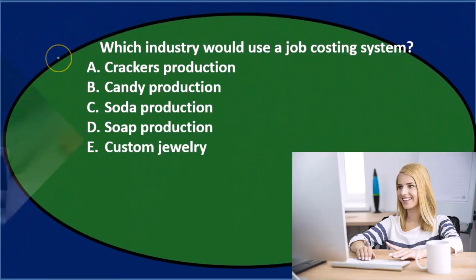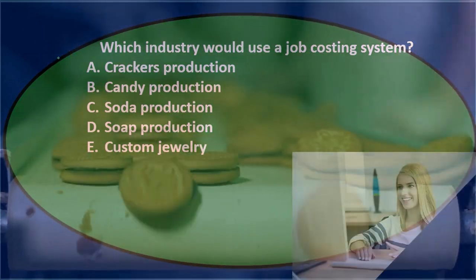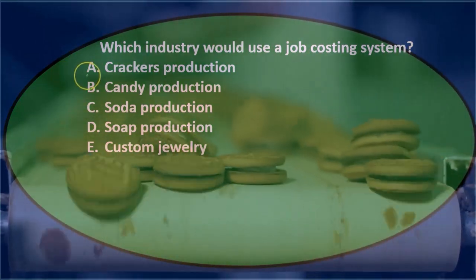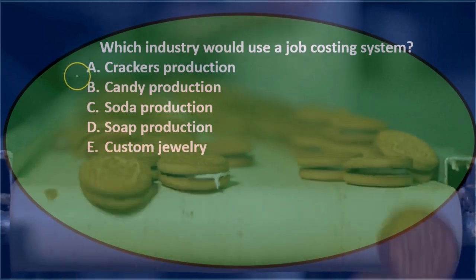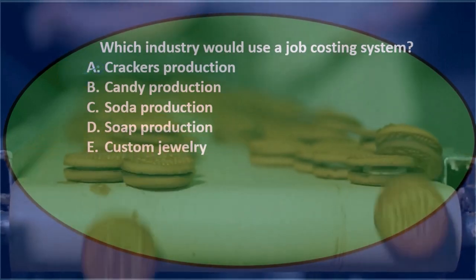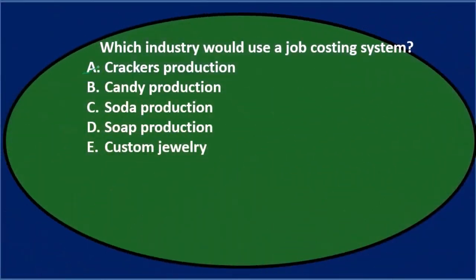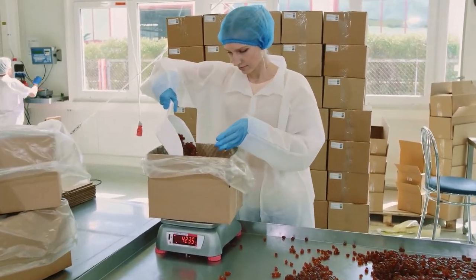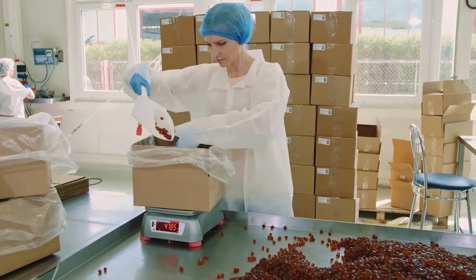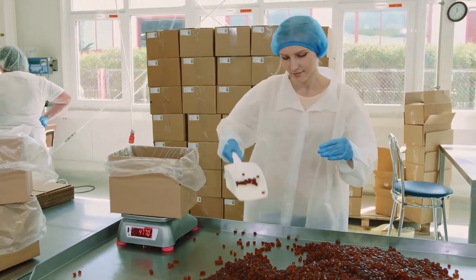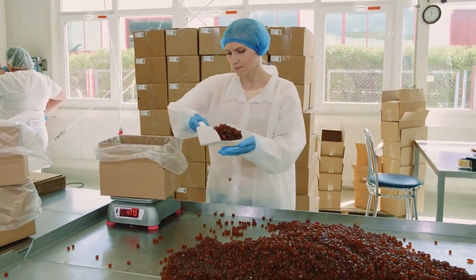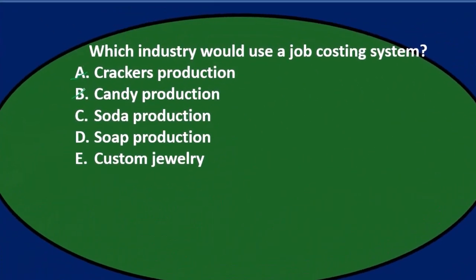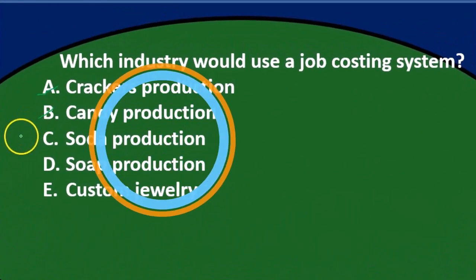So if we have crackers that we're making, they all seem the same, so we're probably not going to use a job cost system — unless they're like custom crackers, which is probably not the case. Then candy production — again, unless it's going to be really customized, like a specialty type of shop, then probably not. If we're talking about just normal candy, taffies and stuff, they're probably all the same and we're working on making them as cheap as possible.